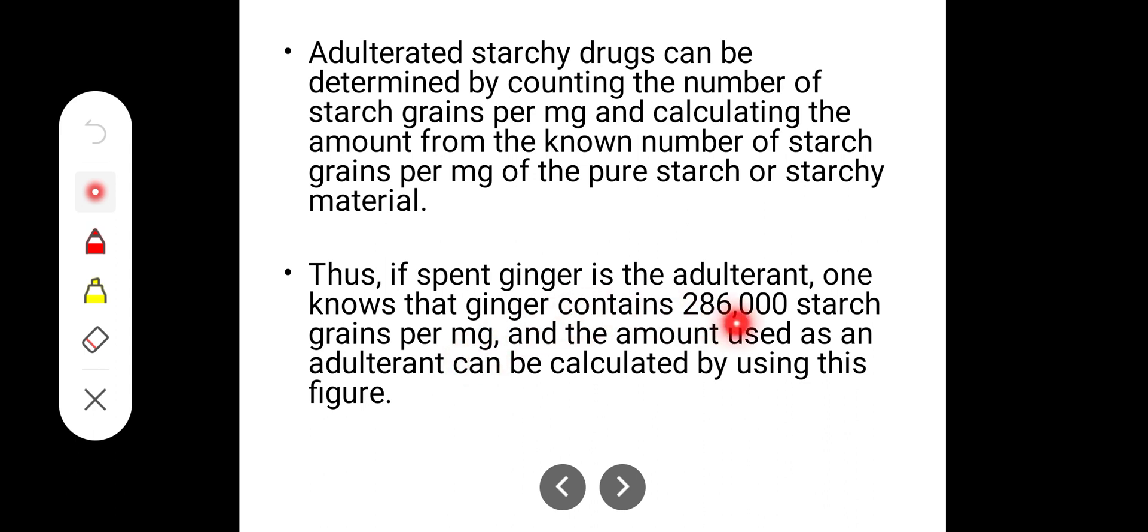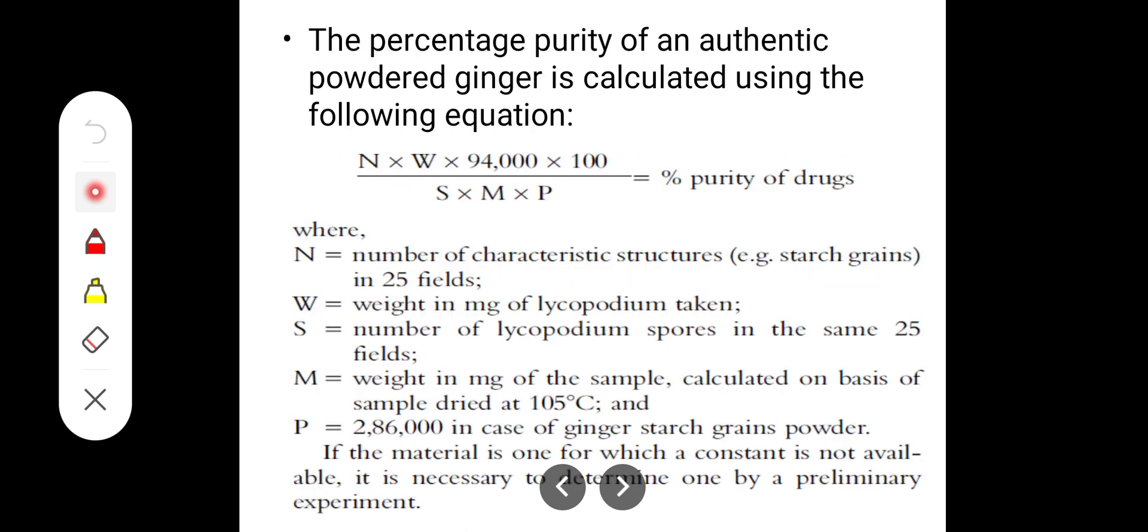That is well determined: in one milligram of ginger powder there will be 286,000 number of starch grains. This is established and known. The amount used as an adulterant can be calculated using this figure. If it is not coming to this number in one milligram, that means the ginger is adulterated.